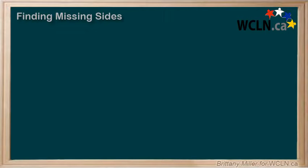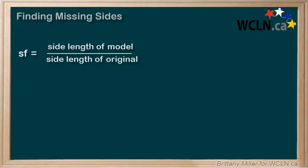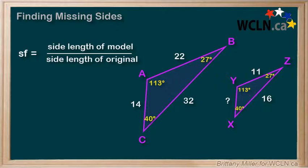Since similar triangles are scale models of each other, we can use the scale factor to find unknown sides. Let's jump right into an example.